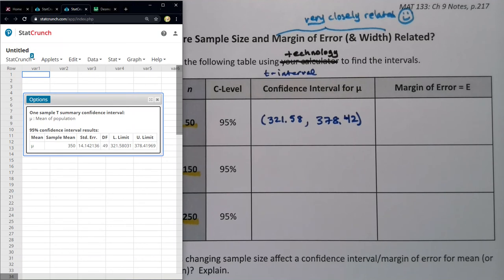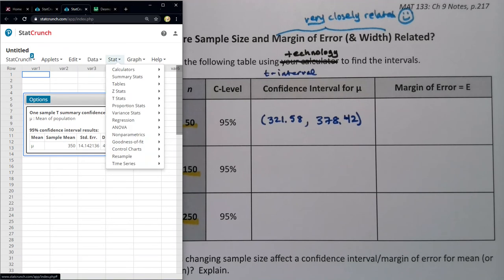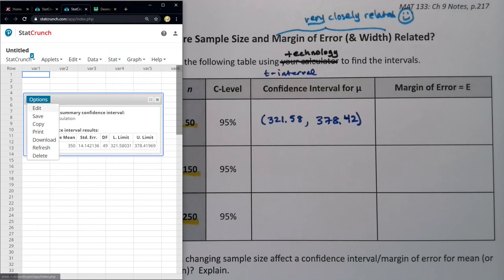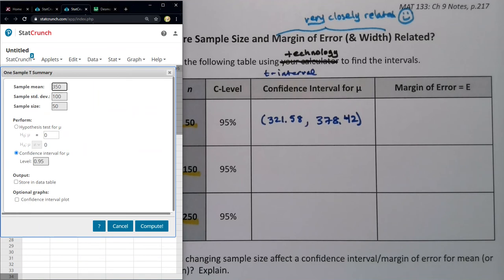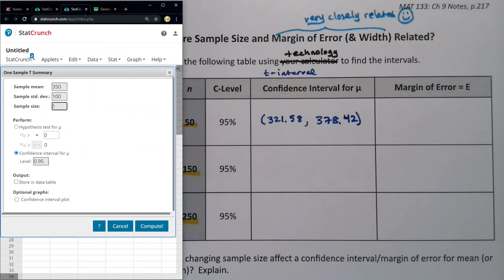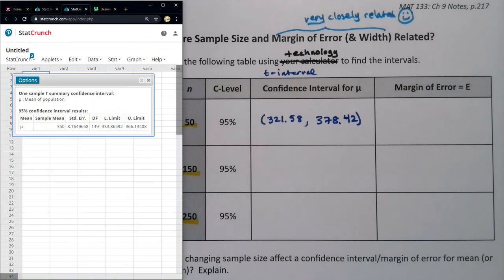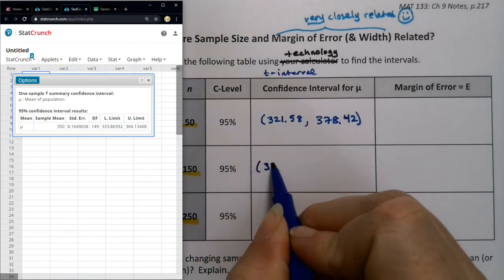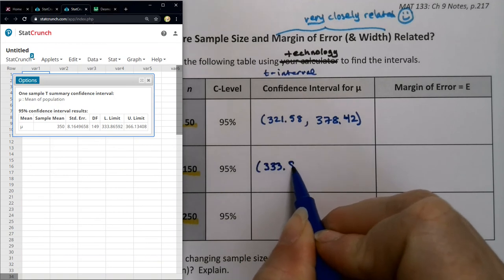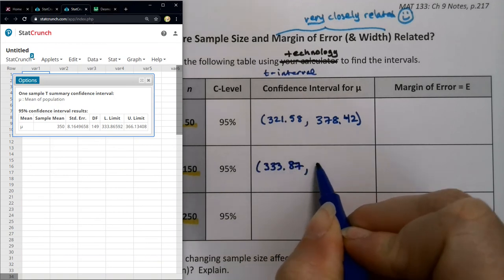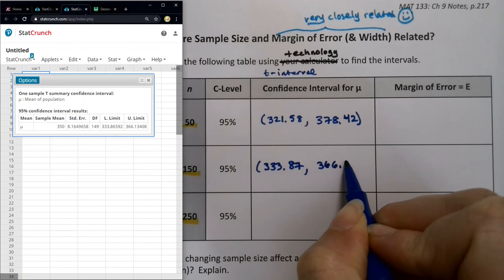Now, if you want to redo it in StatCrunch, you don't have to go back and go through all that rigmarole. Although you can stat, t-stat, one sample with summary, you can do that. But you can also just go to here to options and click edit. And it'll take you right back. And then you can just change this to 150. And then click compute. And there we have it. 333.87, 366.13.